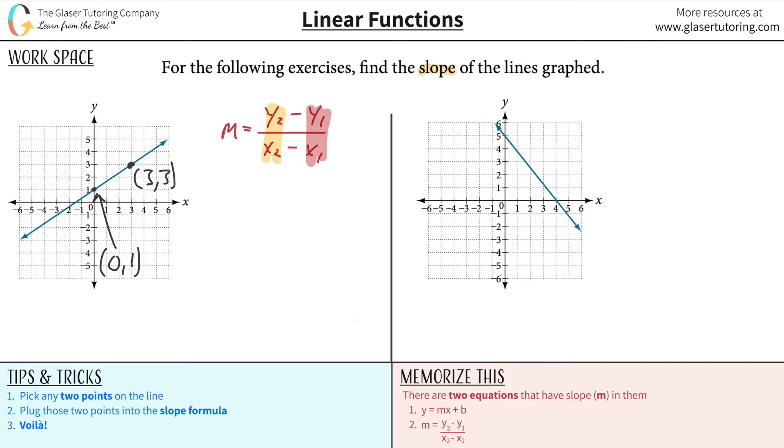Now it doesn't matter which one you choose as your first point or second point. So let's call this one number one, this first point number one, and we'll call this one number two. Essentially, this value would be my x1, and the second one would be the y1.